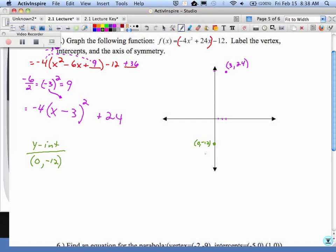To find our x-intercept, we're going to take negative 4 times x minus 3 squared plus 24, and we're going to set it equal to 0. So we're setting the y value equal to 0. Subtract 24 on both sides. Go ahead and divide by negative 4.